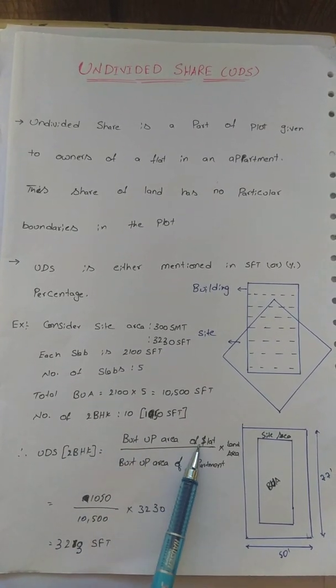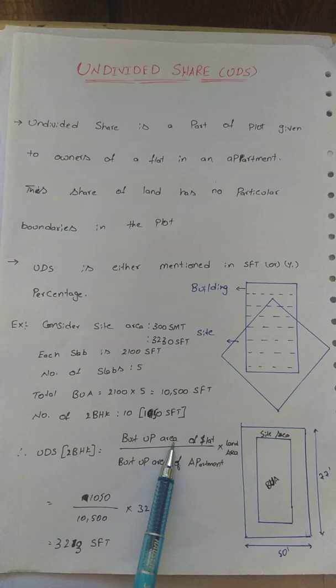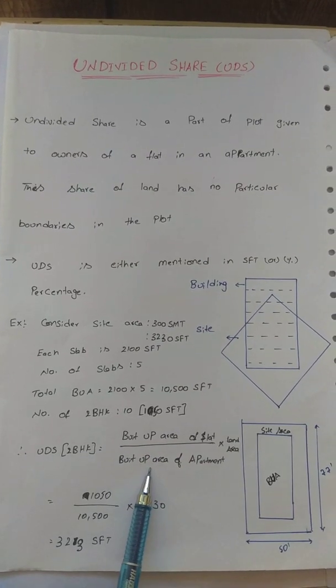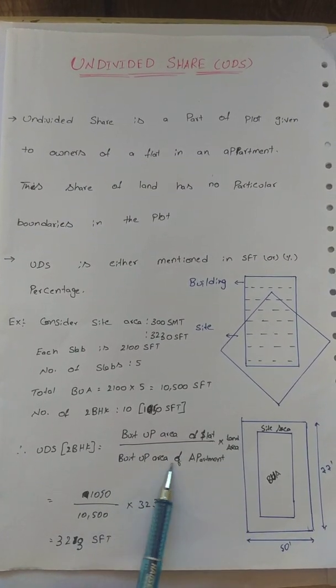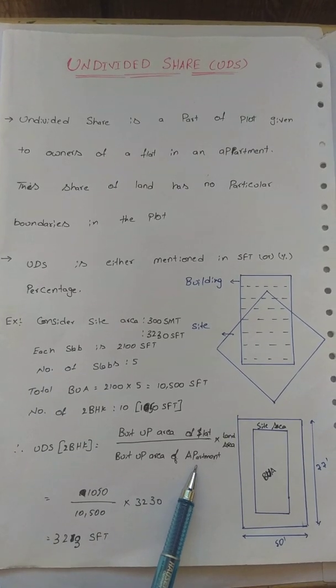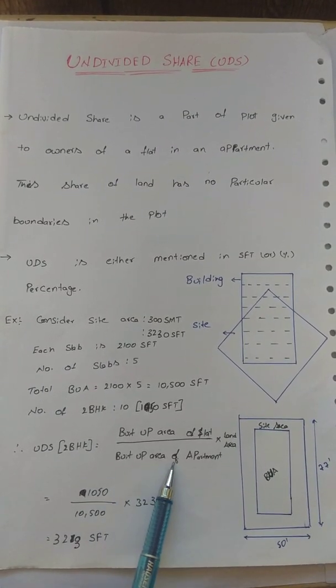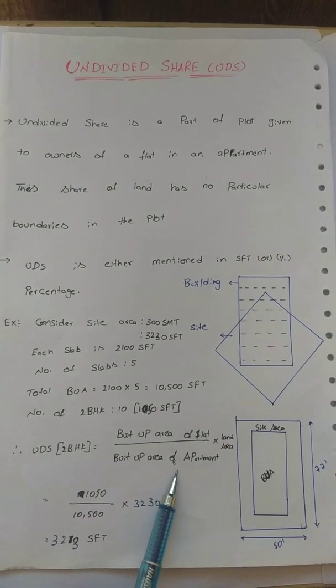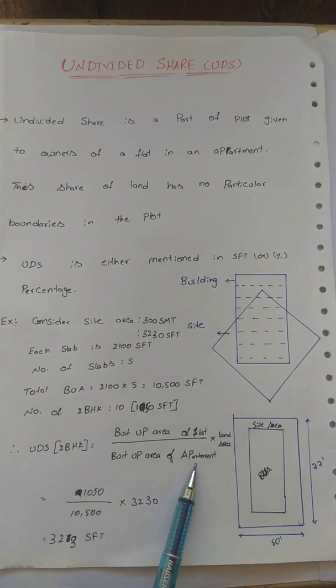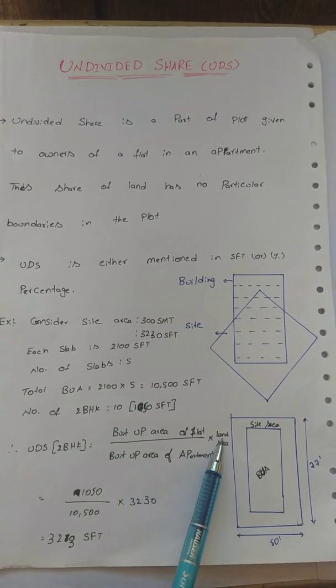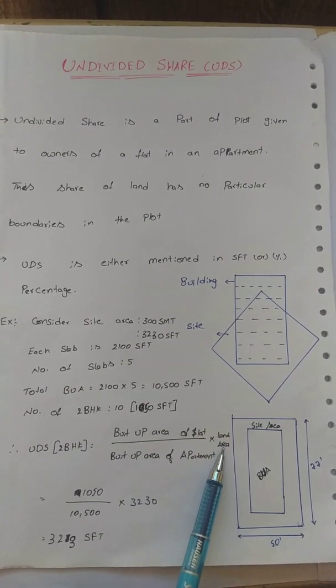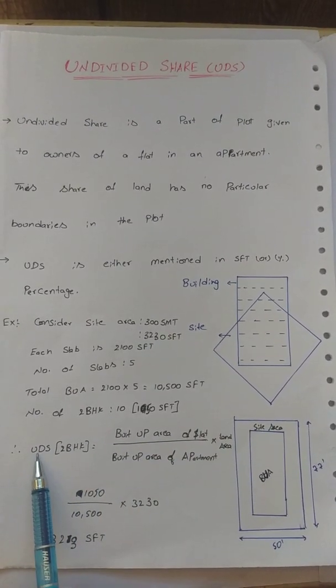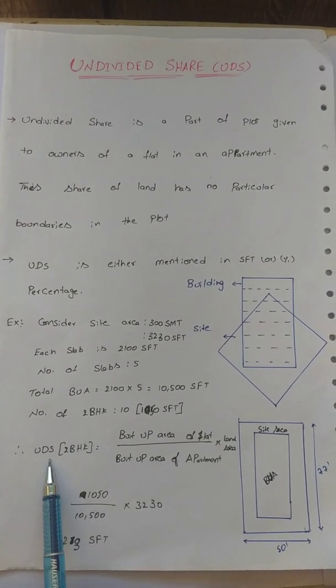Your share is built-up area - you use flat built-up area divided by total built-up area of apartments. You have to measure the apartment slab area, the number of floors, multiply to get total built-up area of apartments, then multiply by the land area. You can calculate the undivided share easily.